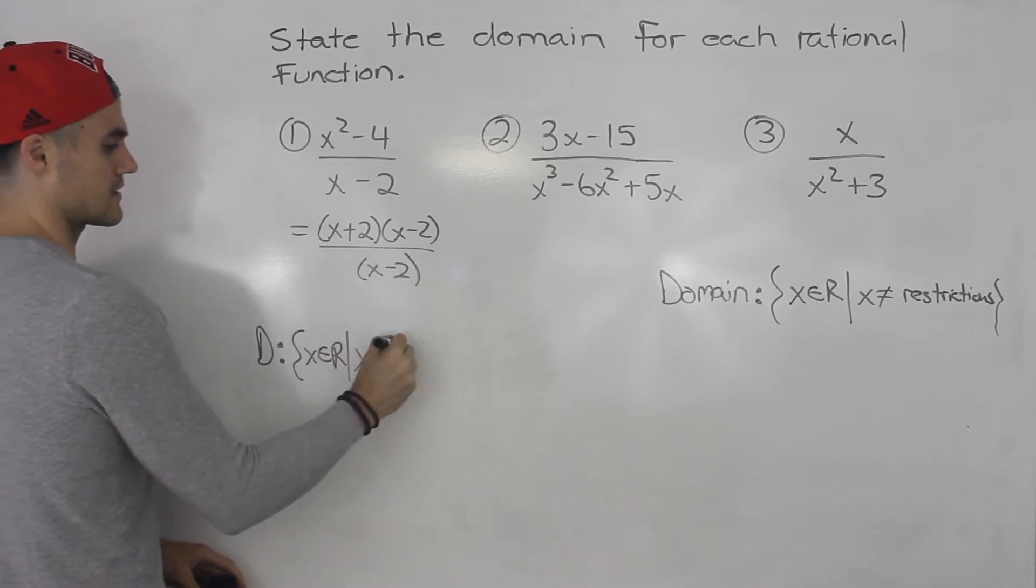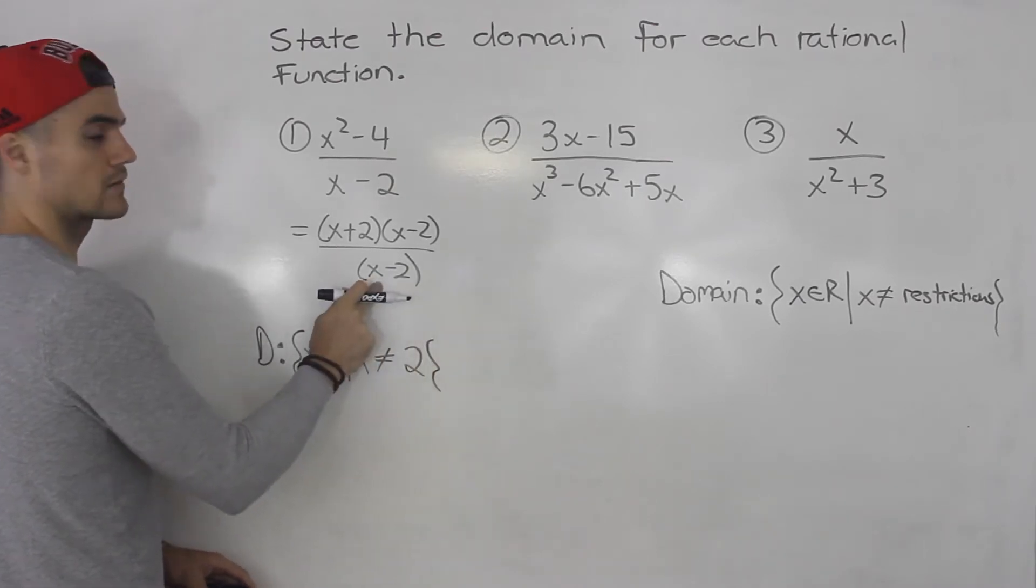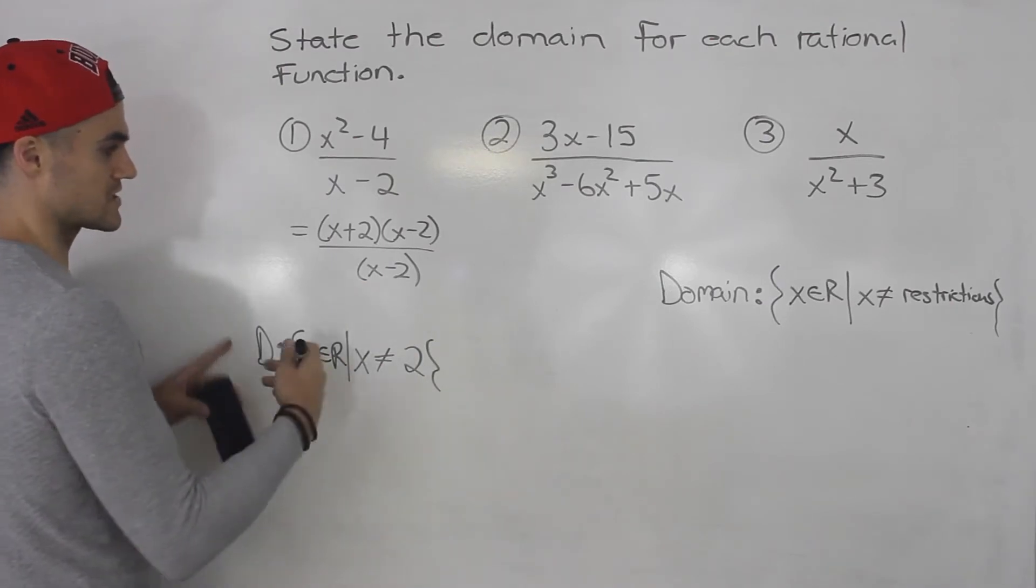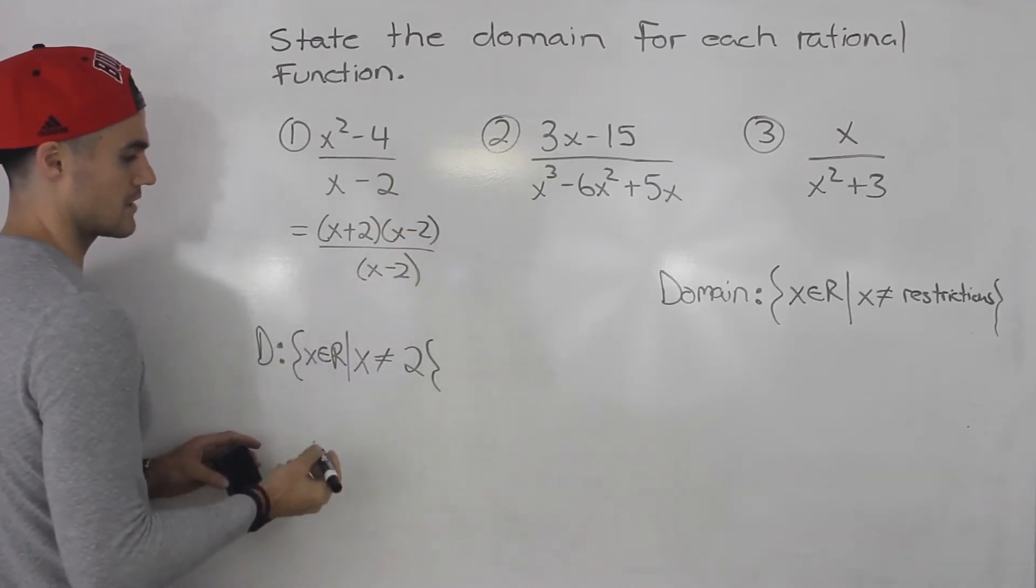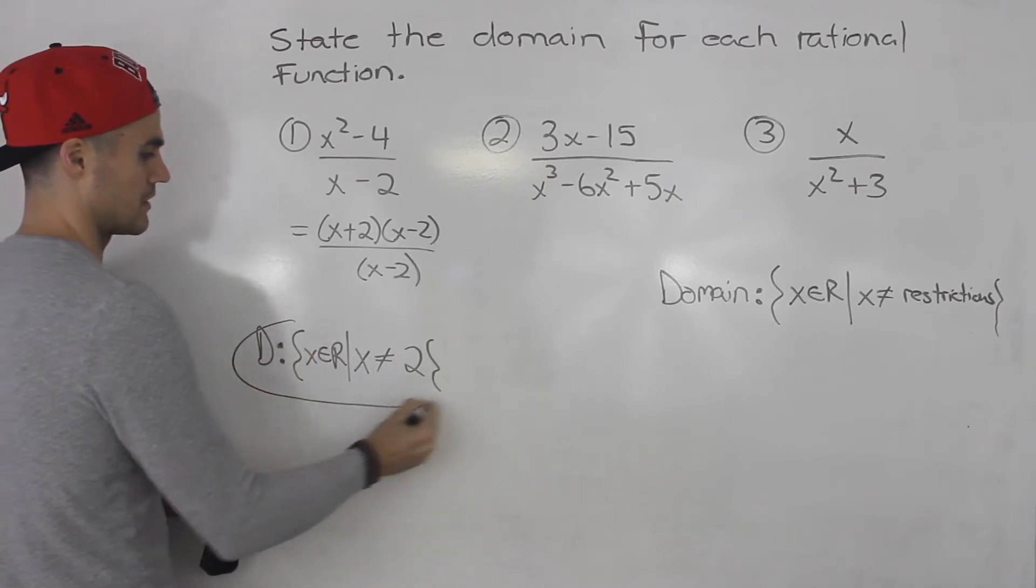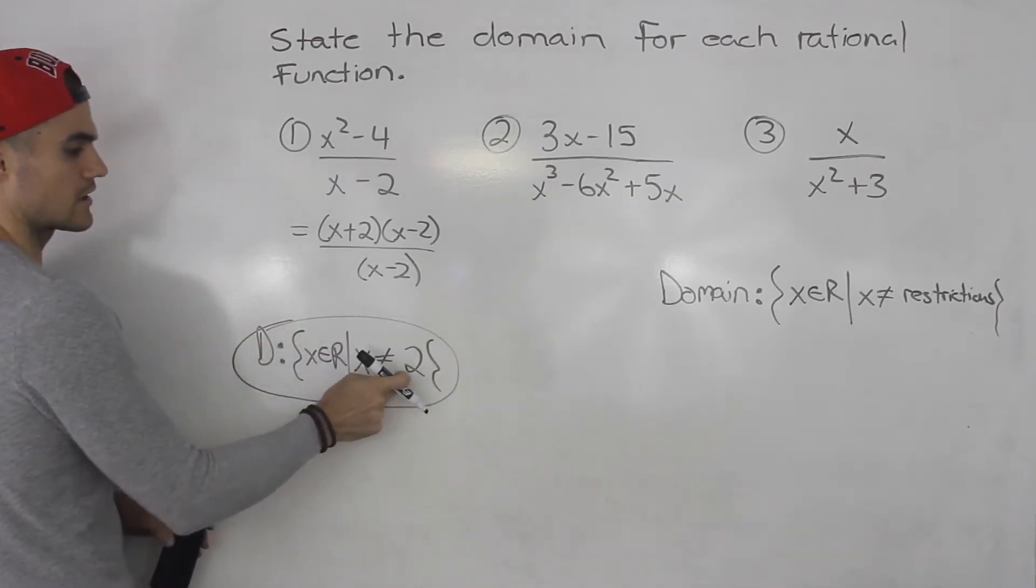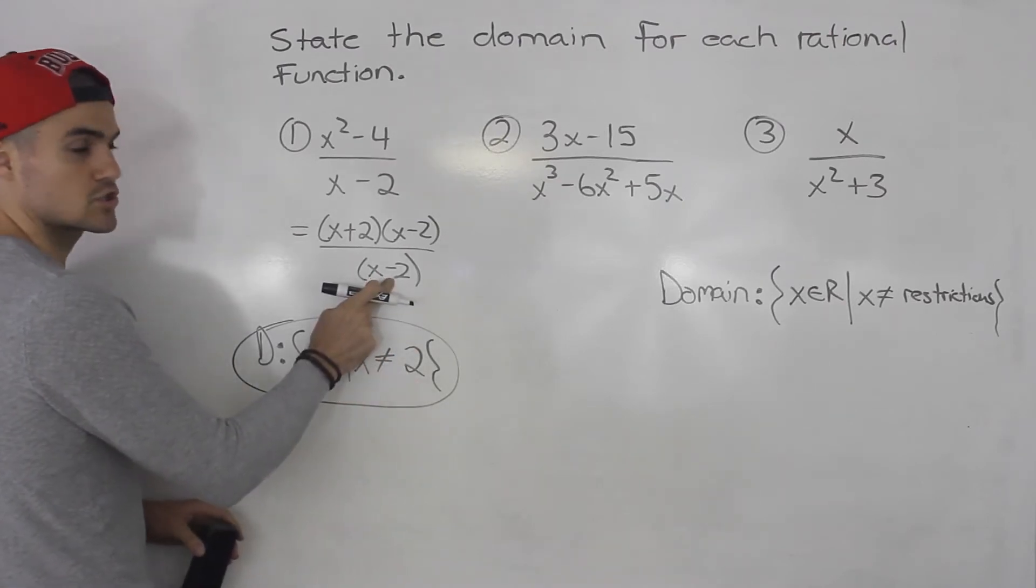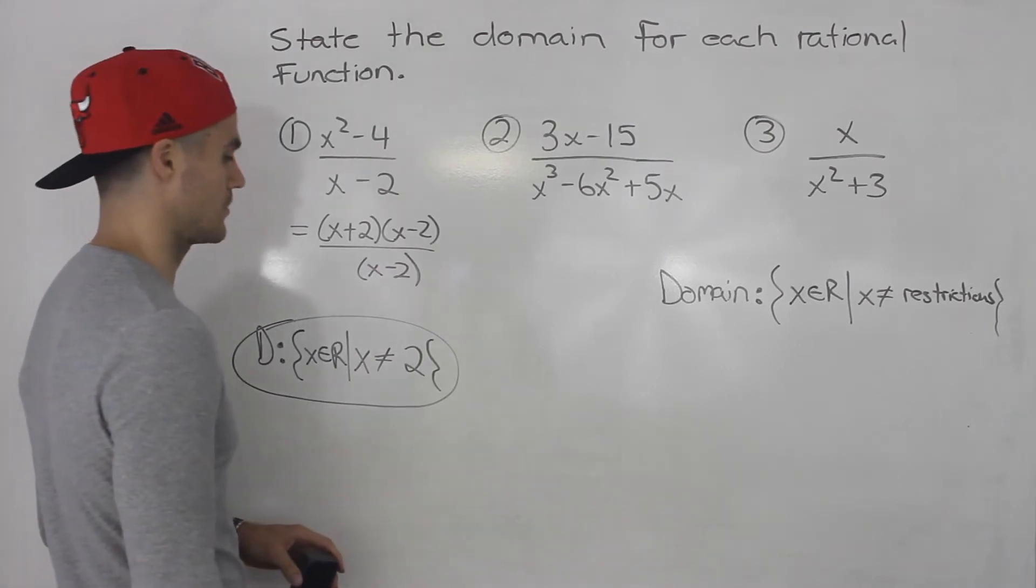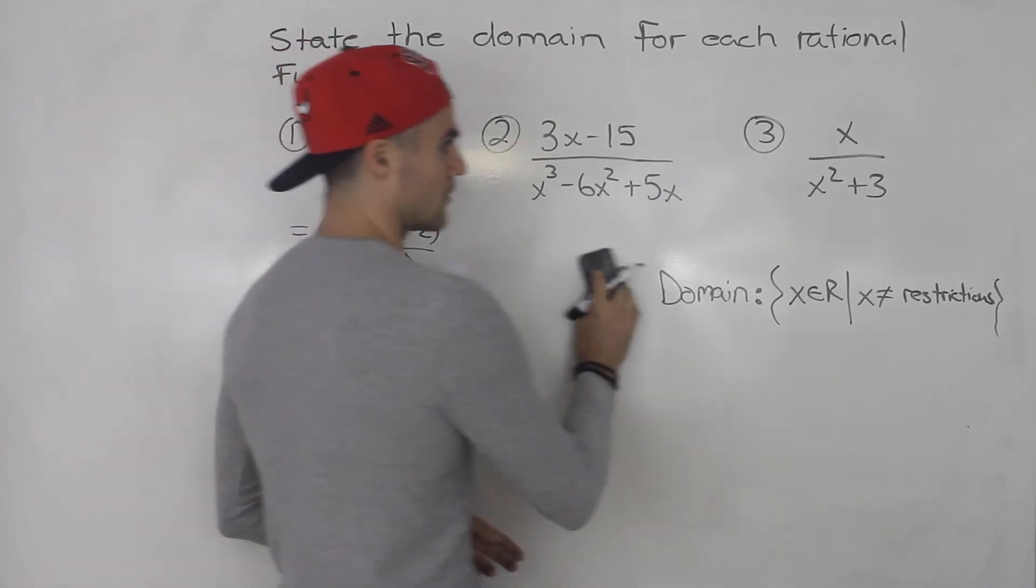And then notice that x cannot equal 2, because that would make the denominator equal to 0. That's the restriction. And we don't have to simplify this. The (x-2)'s would cancel out. But this here is the domain: x∈ℝ, and then x cannot equal the restriction. The only restriction is 2, because there's only one factor in the denominator.